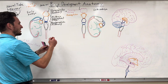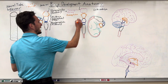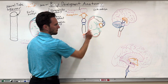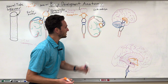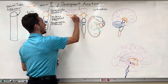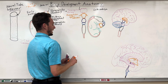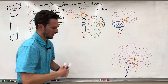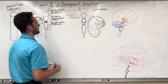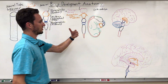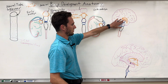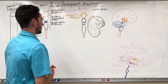In the diencephalon, there are two buds called the optic vesicles, which will give rise to the optic nerve and the eyes, along with some associated structures. This is actually the only cranial nerve — the optic nerve — that originates from the diencephalon. The rest of the cranial nerves will actually originate from the midbrain, pons, and medulla. That's a fun fact.